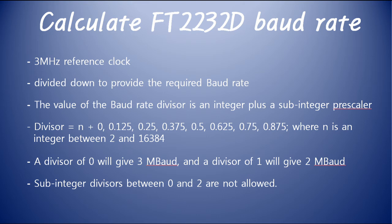For example, for a calculation of 115,200 BPS, dividing 3,000,000 by 115,200 equals 26.041. The divisor value of 26.041 is between 26 plus 0 and 26 plus 0.125, which is closer to 26 plus 0, so 26 is used as the divisor. Dividing 3,000,000 by 26 equals 115,384.6 BPS, which is within the plus or minus 3% range, so there is no problem with 115,200 BPS UART communication.